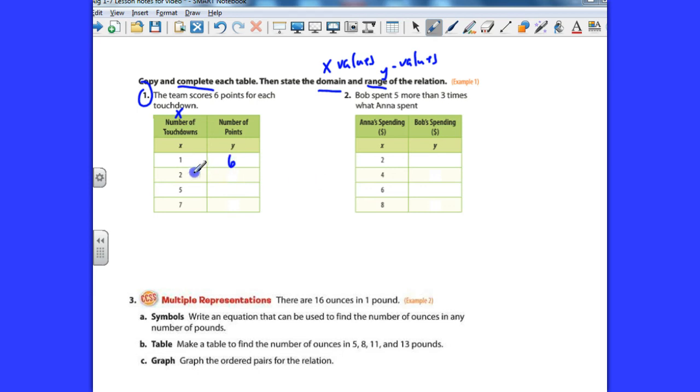So two touchdowns, that would be two sixes, right? So it would be two times six, which would be 12. Five touchdowns, notice they jumped here. That's okay. Five touchdowns, that would be five times six would be 30. And then seven touchdowns would be seven times six, that would be 42 points. So that's one. That's completing the table.